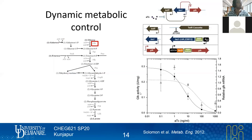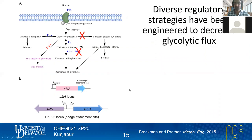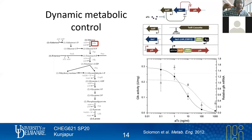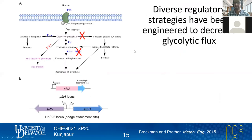The next strategy addressed a key limitation: turning off transcription prevents new GLK expression and translation, but it doesn't account for GLK protein already present. Early in exponential growth, cell division can dilute out existing protein. But later in growth, you need something to actively eliminate the protein that's already there — otherwise it continues to function as an enzyme.